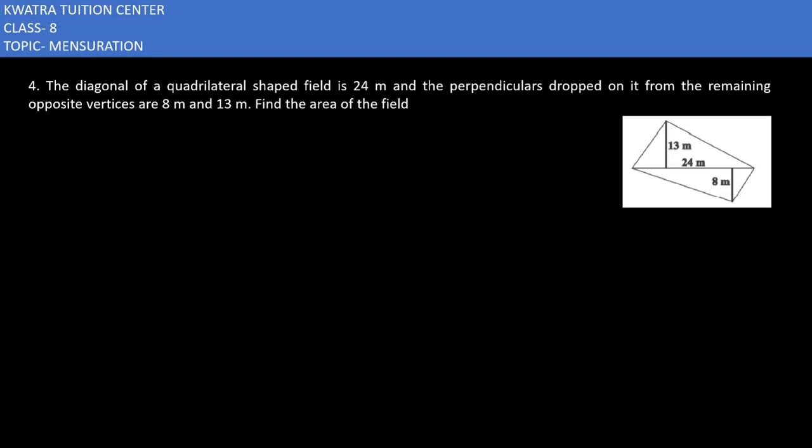Let's start with question number 4. It says: the diagonal of a quadrilateral-shaped field is 24 meters, and the perpendiculars dropped on it from the remaining opposite vertices are 8 meters and 13 meters. Find the area of the field.